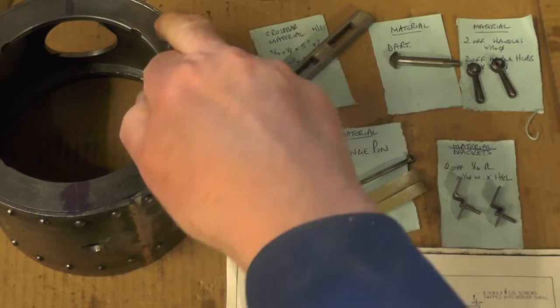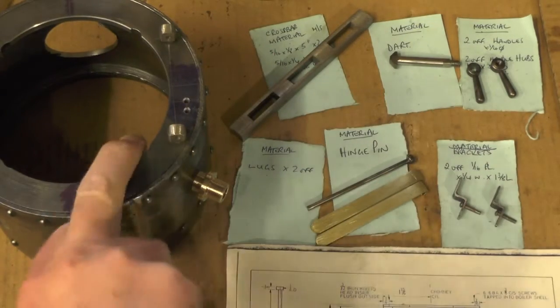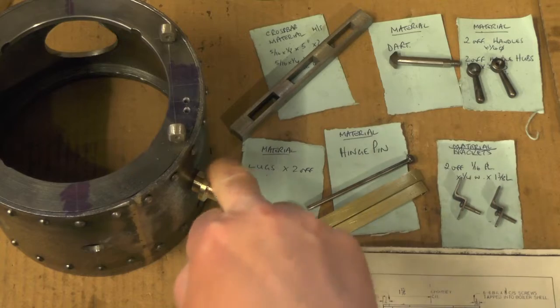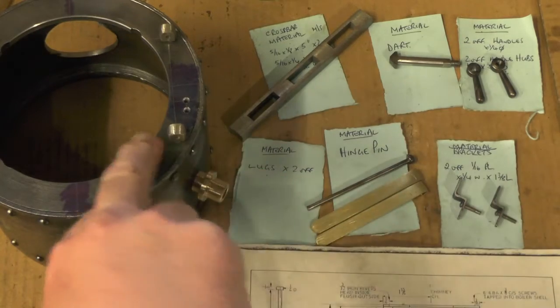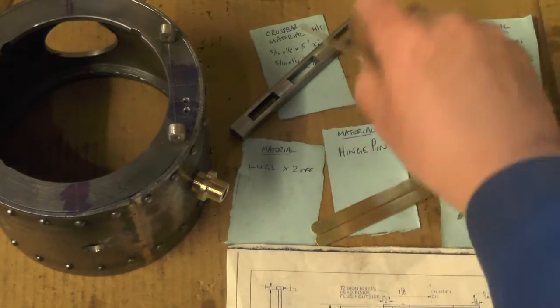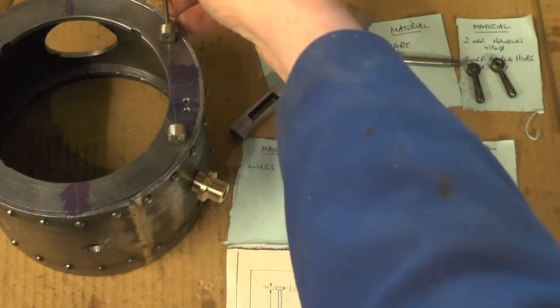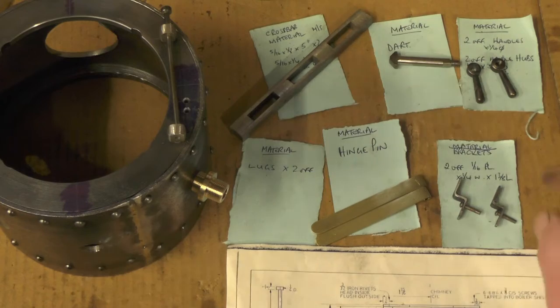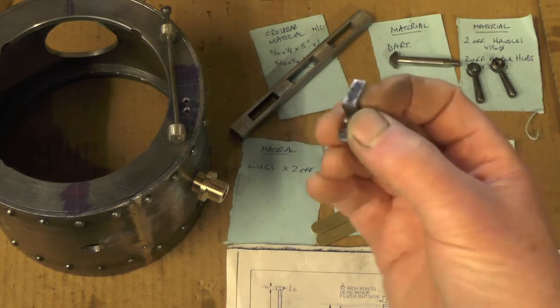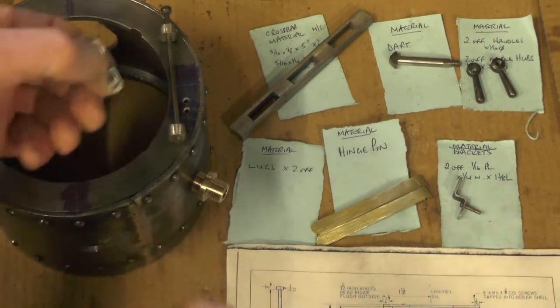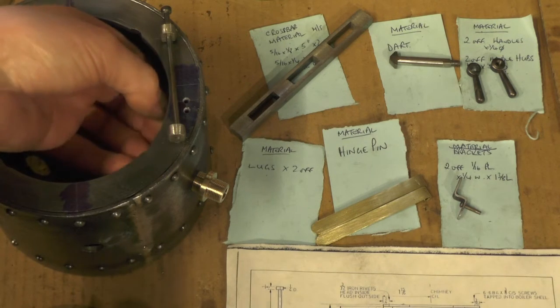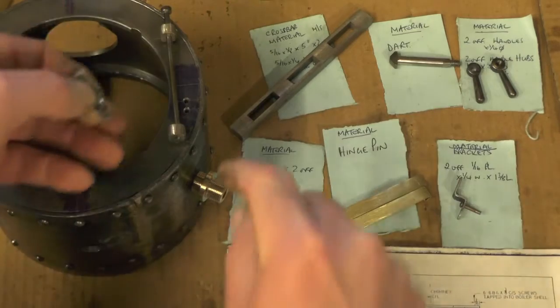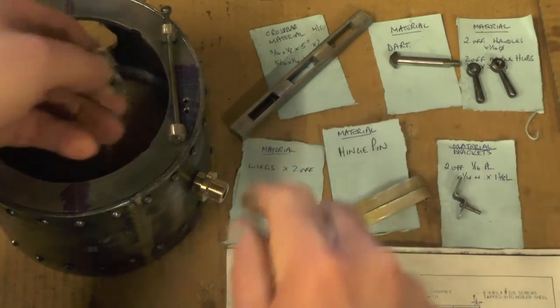I've got the lugs finished now. It tells me to rivet them in from the back. I think while I'm silver soldering these unions, I might just put a dab of solder on them. But before I do that, I'll put the hinge pin in to make sure it's all lined up correctly. The little brackets for the crossbar, they've got to be riveted on on the inside, and then I'll file the rivets flush on the outside.